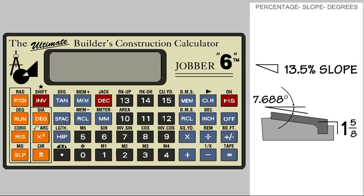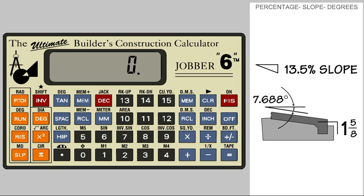We are building a ramp that is to slope at 13.5%. We want to know the actual pitch per foot and the degree of the slope. Turn on the calculator. To enter the 13.5%, we need to go to the decimal mode and enter it as .135.